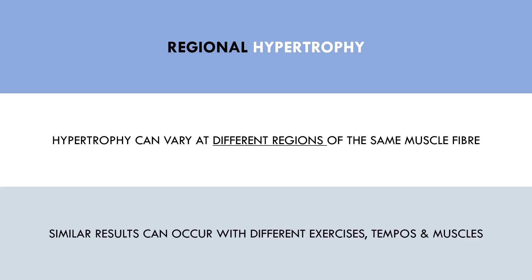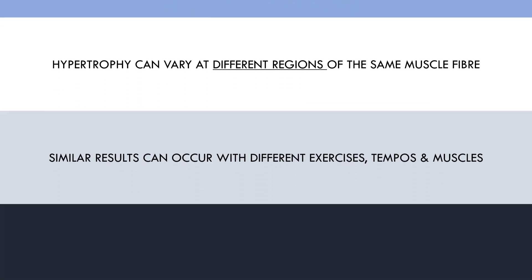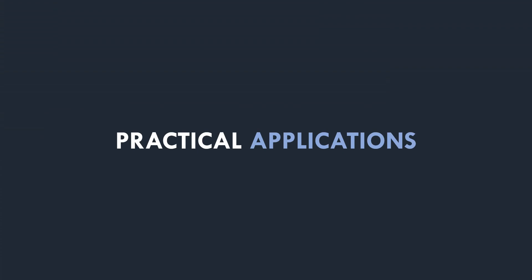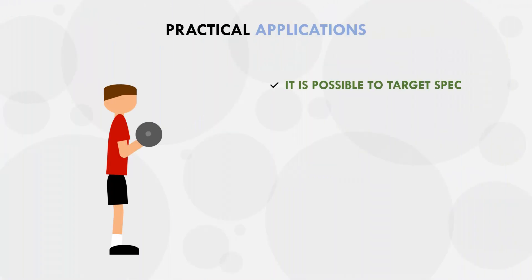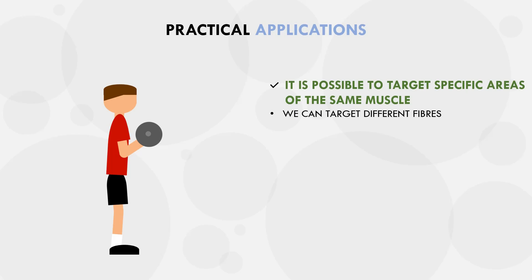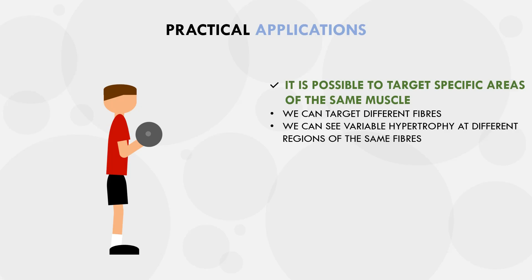However, the evidence is not yet conclusive enough to determine exactly how to target such regions with specific training methods. So what does all of this mean in practice for trainees? It seems that it is certainly possible to target specific areas of the same muscle. We can intentionally target specific fibers based on anatomical structure, and we can also see regional hypertrophy along the span of the same muscle fibers.